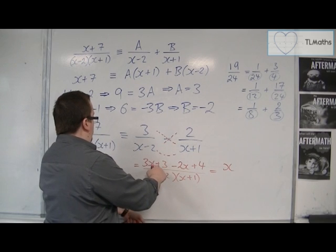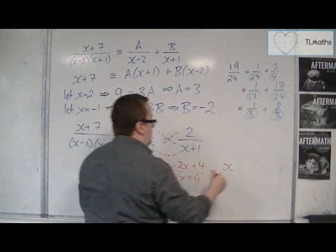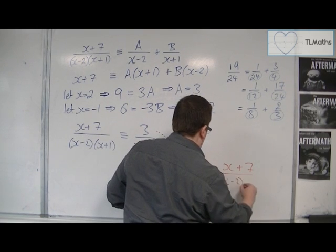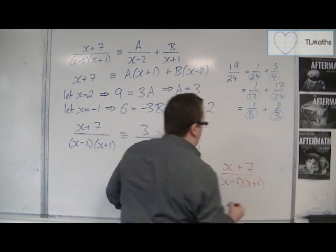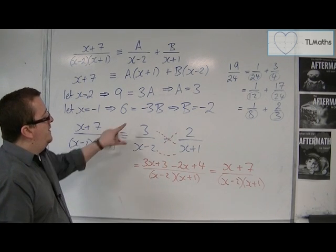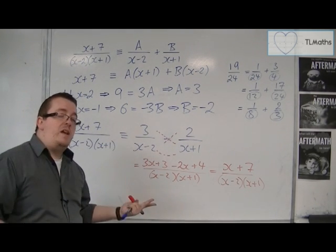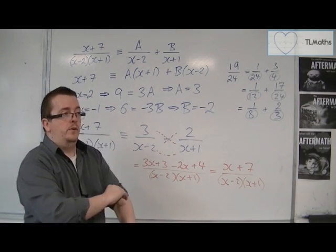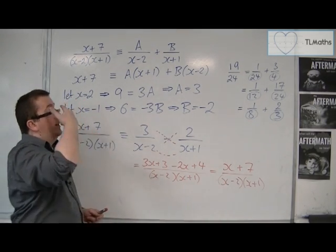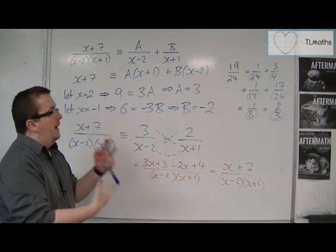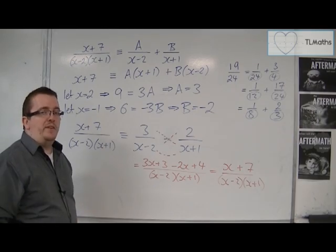Now, in order to make yourself fully convinced that this process has worked, we could always combine these two fractions together like we did in the previous video, and do 3 times x plus 1, so 3x plus 3. Take away 2 times x minus 2, so take away 2x. And then minus 2 times minus 2 is plus 4, all over x minus 2, x plus 1. Now, of course, the denominator's going to be the same, but we just need to make sure that the numerator is the same. 3x take away 2x is just 1x, and you've got plus 3 plus 4, so plus 7. And so clearly, this process has worked. And that would now allow me to integrate this if I wanted to, using logarithms. But this is the process that we're going to be going through, and we're going to see some more examples and more complicated examples coming up in this section. So let's get started.